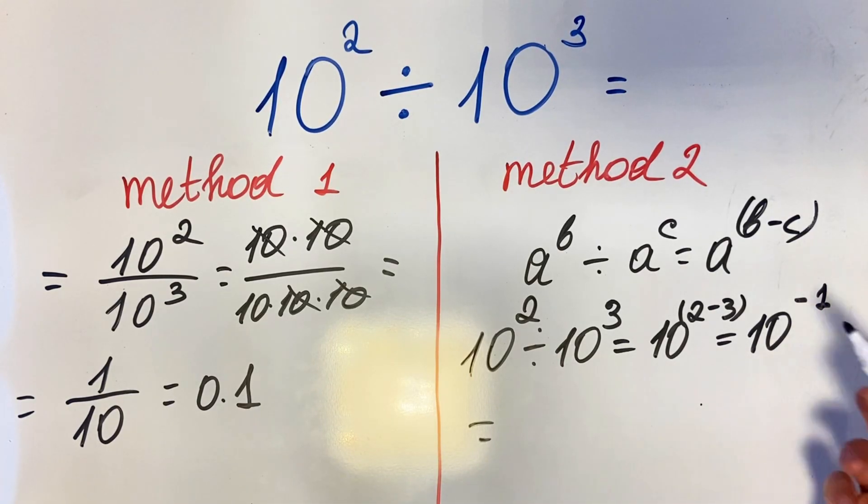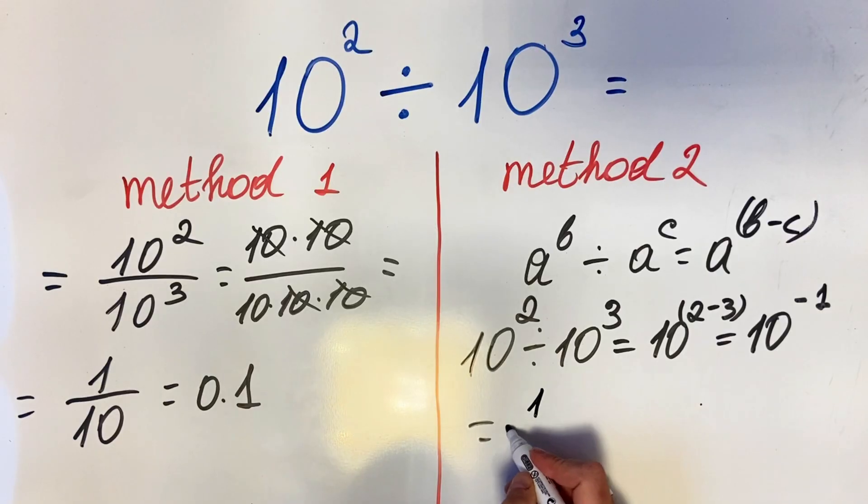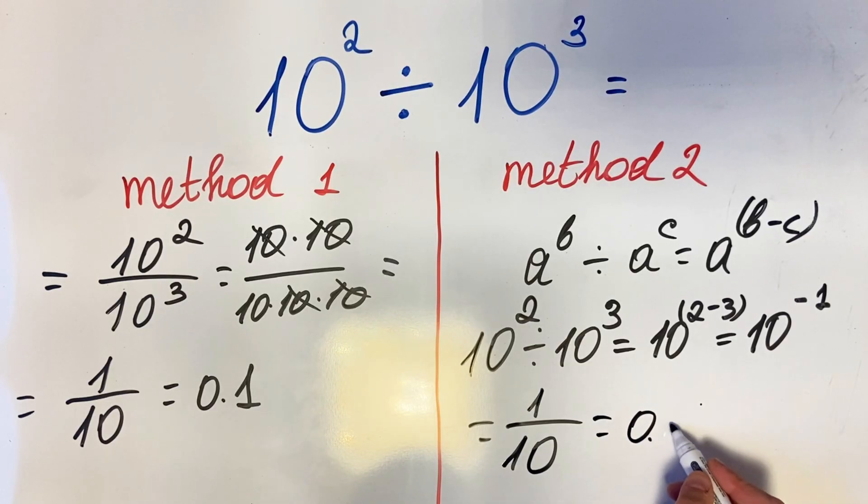negative, you put it in a fraction, so you get 1 over 10, which is 0.1. So these are the two methods: either you use the exponent formula or you do it in the form of a fraction.